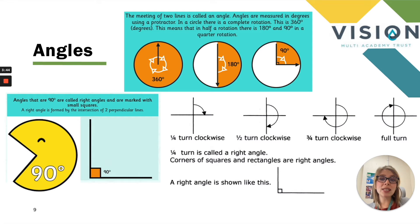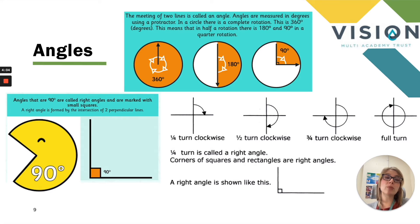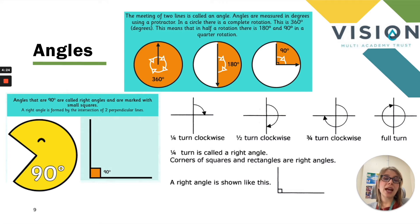Now I'm going to be introducing angles. We've spoken in the previous video about turns — quarter turns, half turns, three quarter turns and full turns — and now we need to relate these turns to angles. The meeting of two lines is called an angle, and all angles are measured in degrees using a protractor. A circle is a complete rotation at 360 degrees, a half rotation is 180 degrees, and 90 degrees is a quarter rotation. An angle that measures 90 degrees is called a right angle, marked using a small square in the corner.